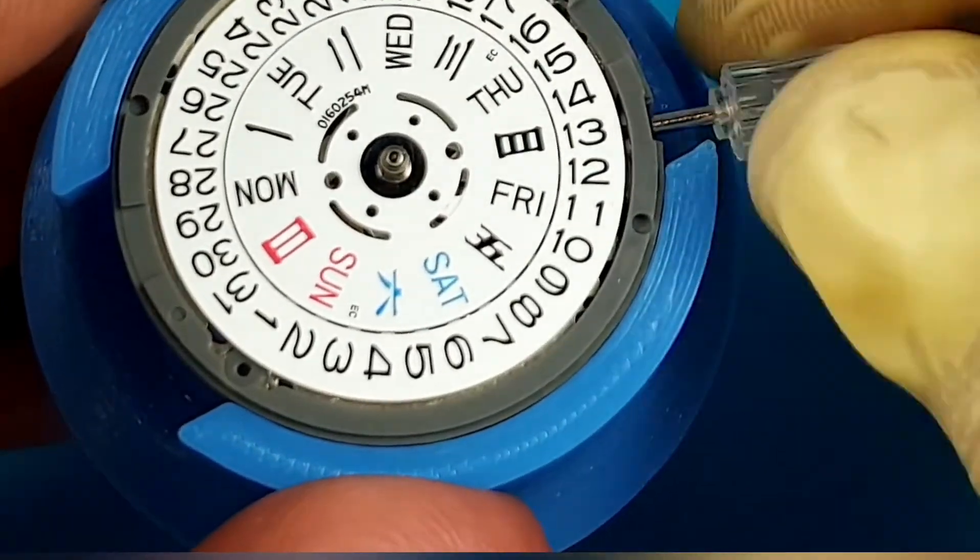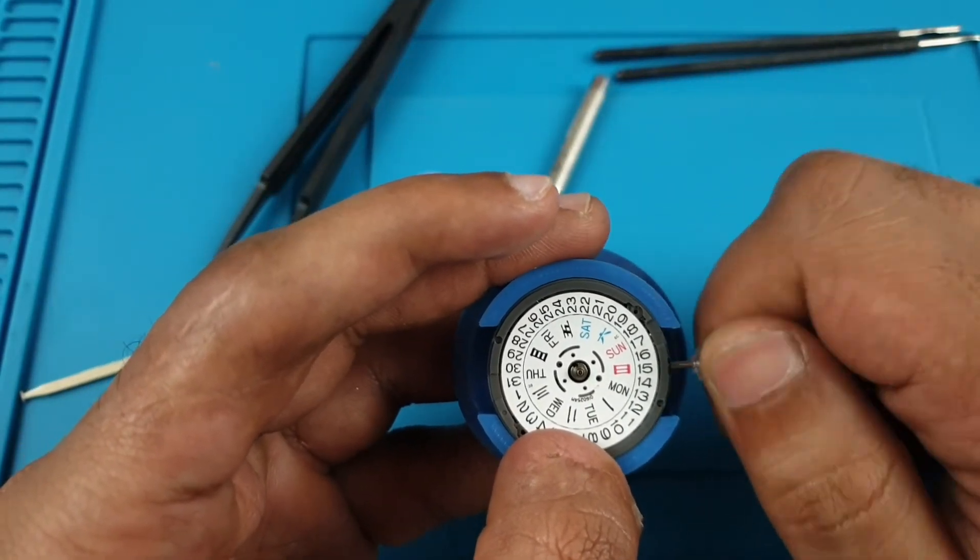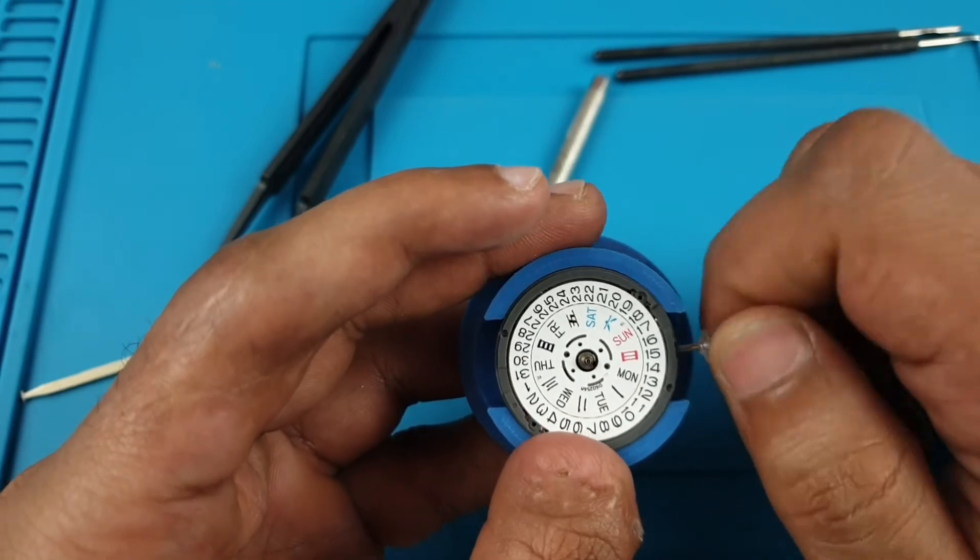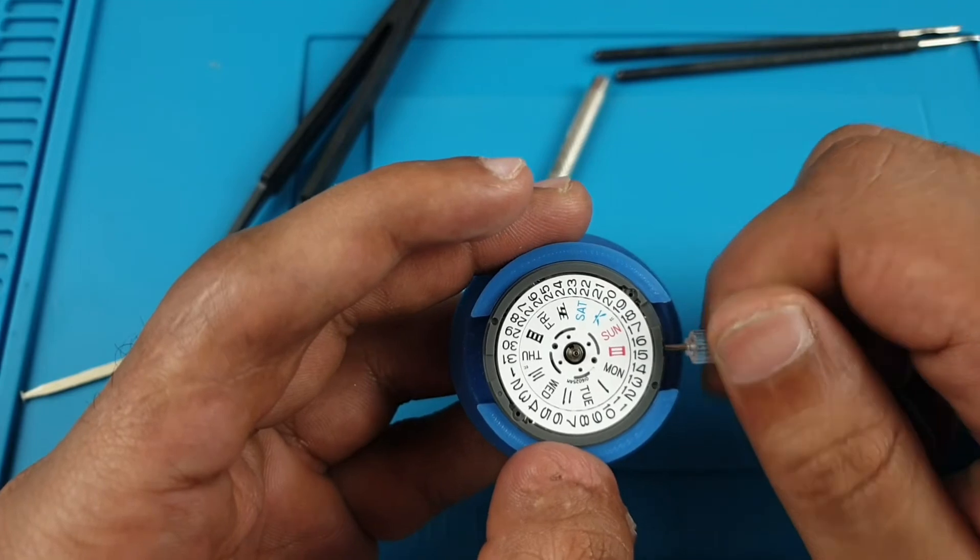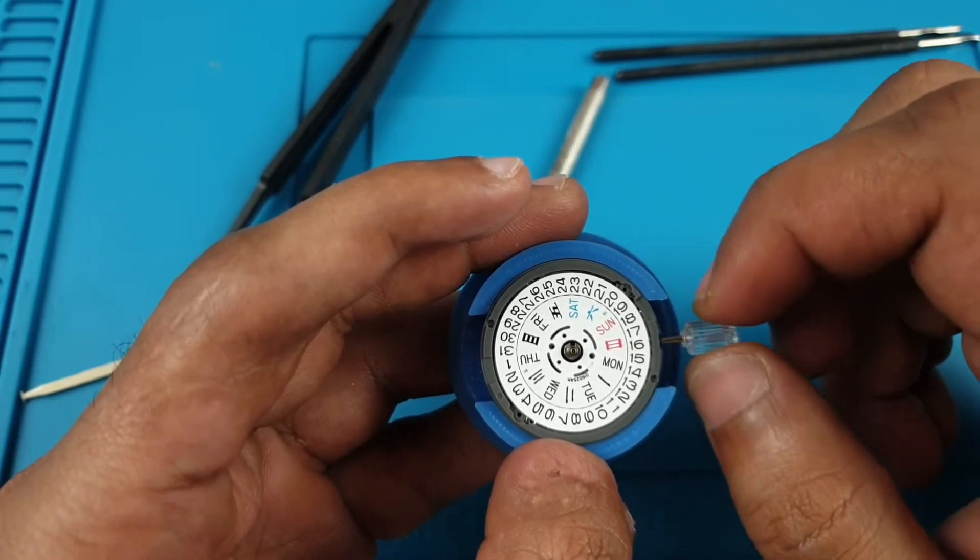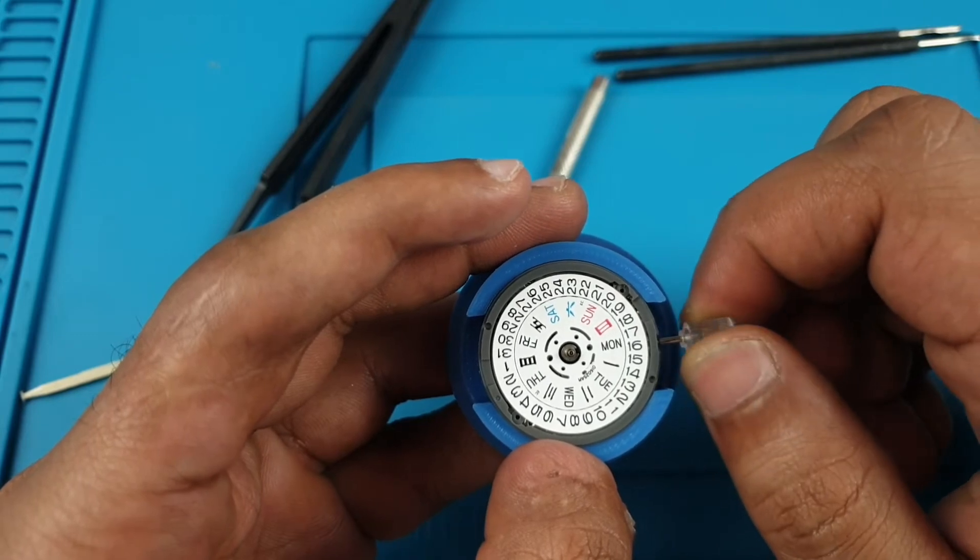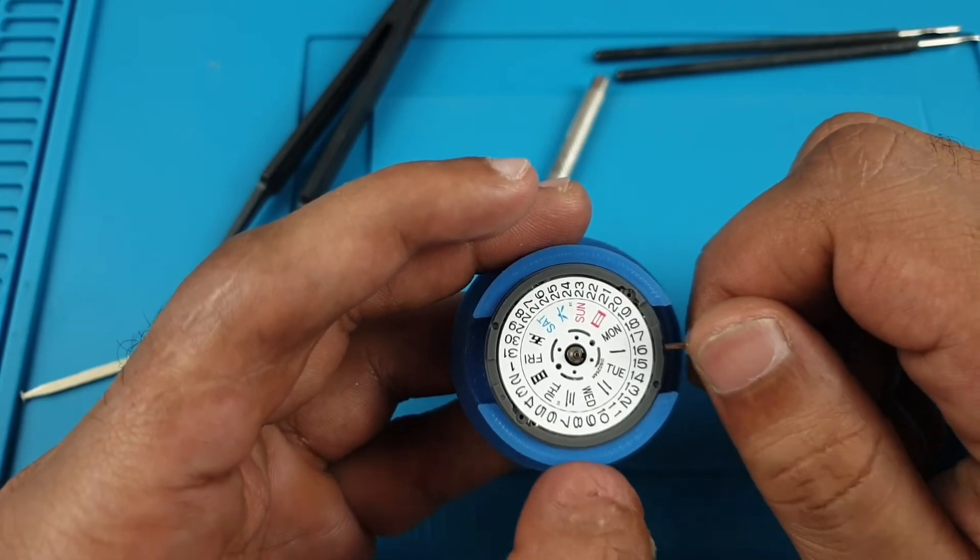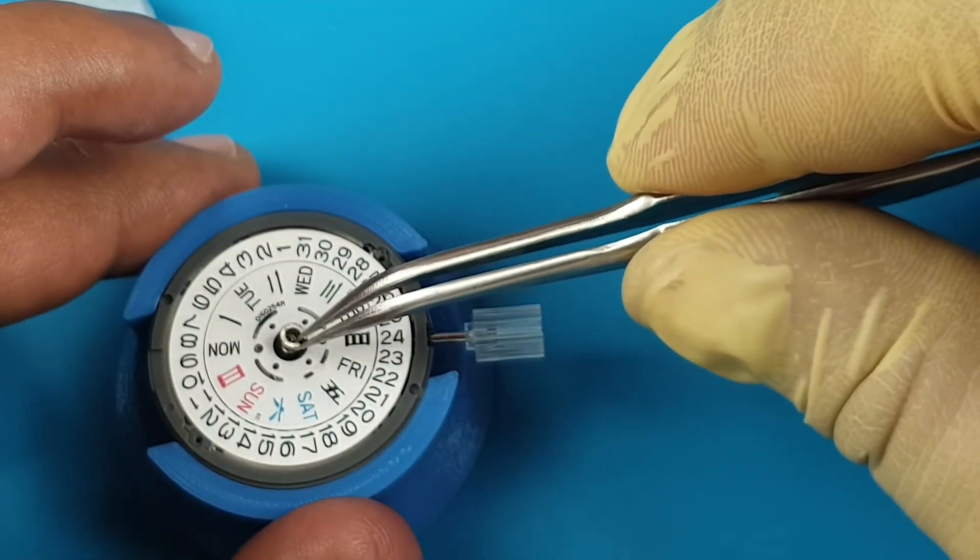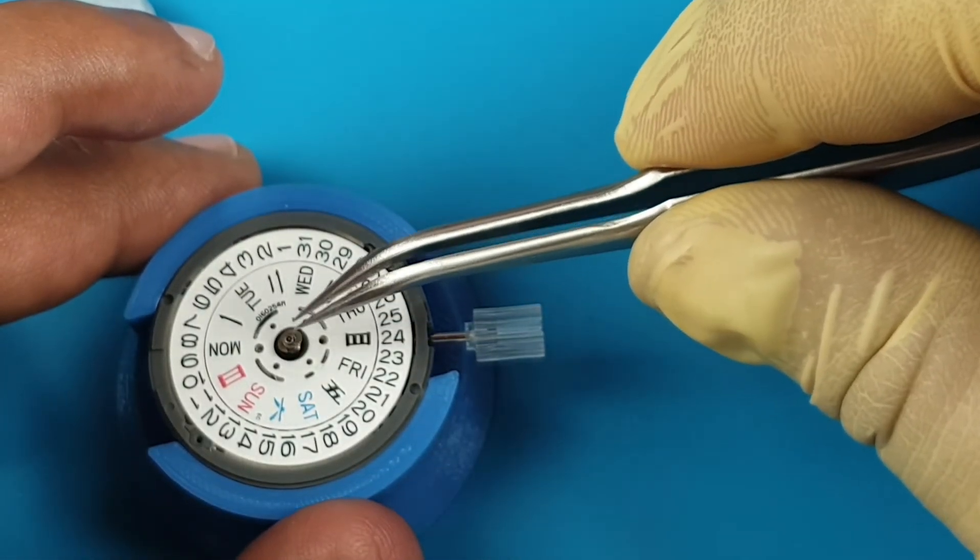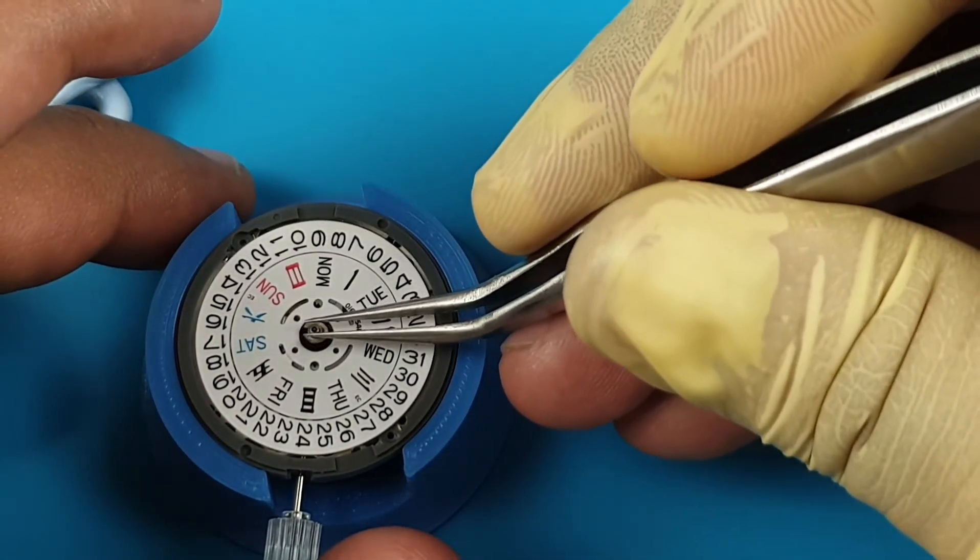So just keep turning it, twisting it till you see how it just sat down. And that's it, you are done. Now go ahead, pull out the crown to the second position, cycle through the full 24-hour clock so you can see the date and day wheel function again. You'll see the date changes and the day wheel changes. And once you've done that, you can just replace that C-clip. Just place it on top, that little snap, and press down with the end of your tweezers.